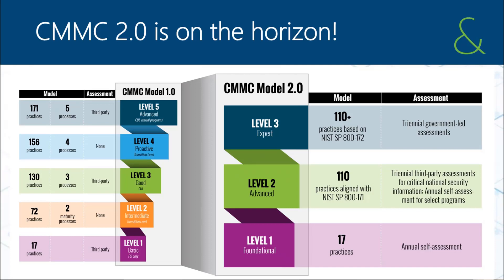Some other factors went into CMMC 2.0 as well, primarily making things more simplified for the contractors. Currently CMMC has five different maturity model levels. With CMMC 2.0, there will be only three maturity levels — levels one, two, and three. They realized it didn't make a whole lot of sense to have levels two and four in the mix, since no contracts were ever going to require them anyway. The DoD contracts today only require levels one, three, or five. Levels two and four were just there to show incremental progress along the way.